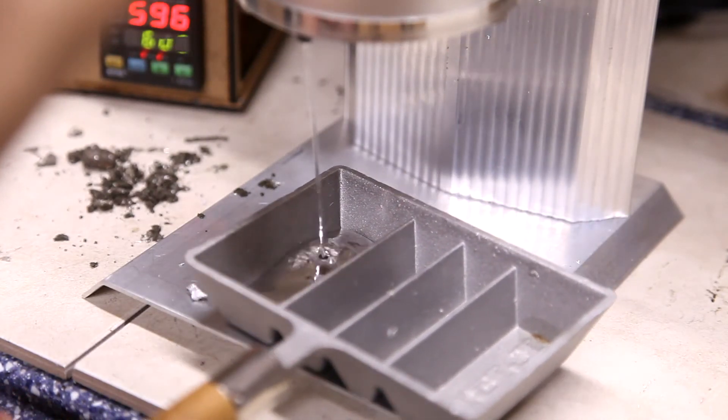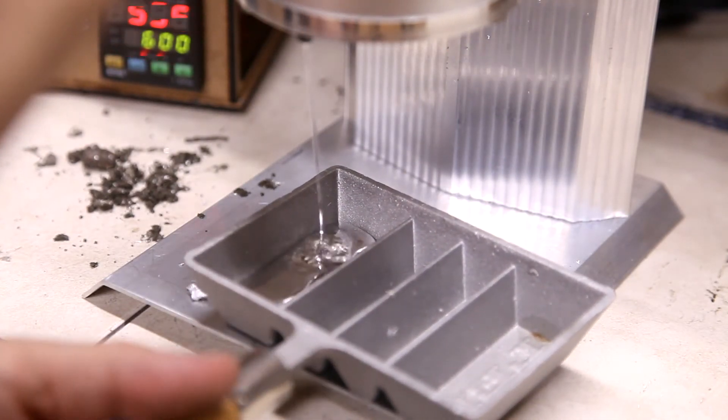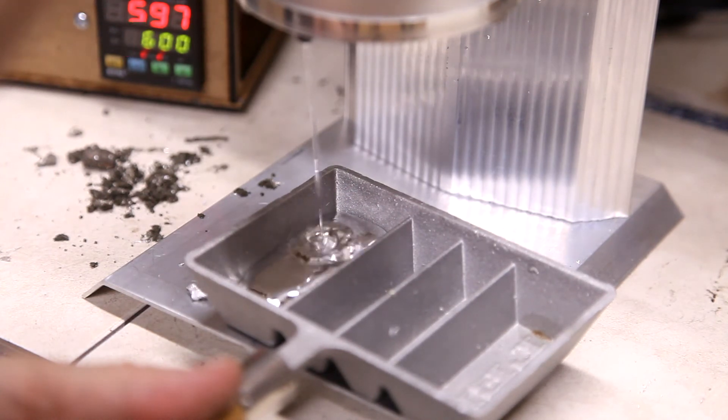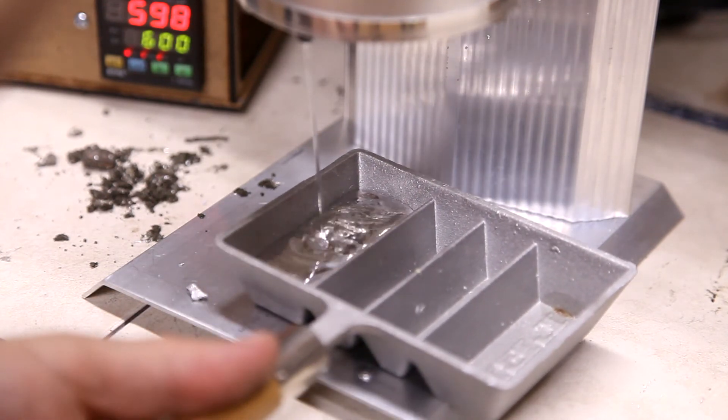Once my pot gets to about three-quarters full, I start dispensing some of the pewter into ingots using one of my molds.